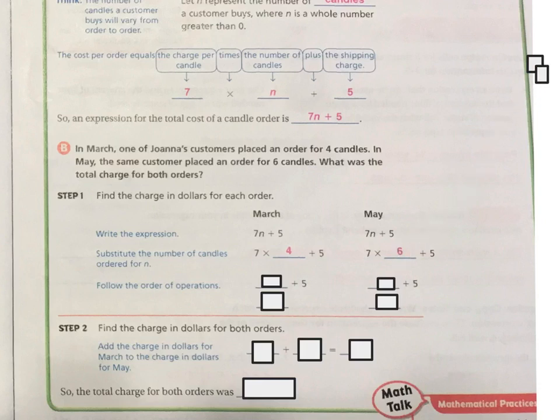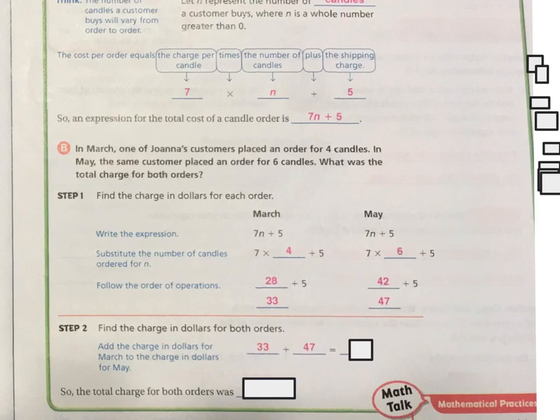So now if we do the order of operations, we have 7 times 4, which is 28, plus the 5, which is 33. And then in May, we have 7 times 6, which is 42, plus the $5 for shipping is 47. Now to find the charge for both orders, we're going to have to add the 33 and the 47. So 33 plus the 47 gives us 80. So that means for both months, the total charge was $80.